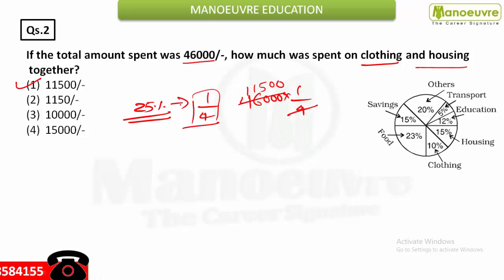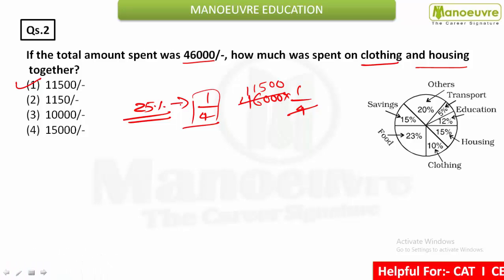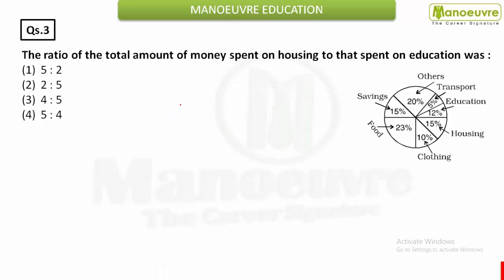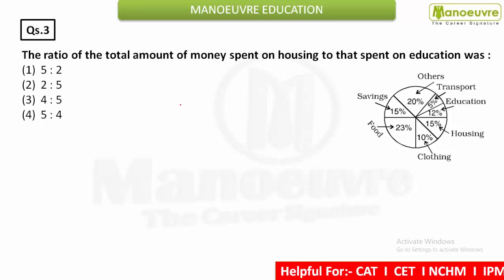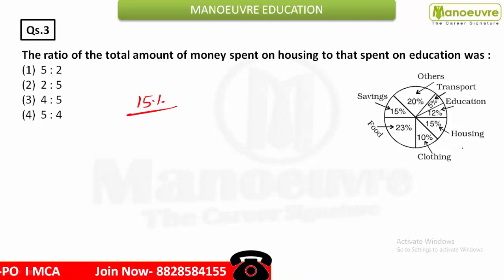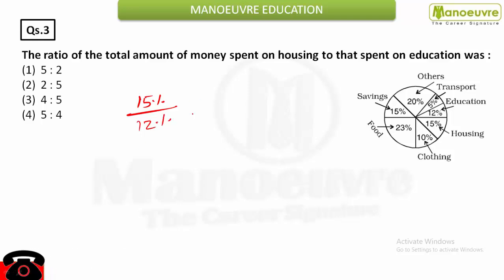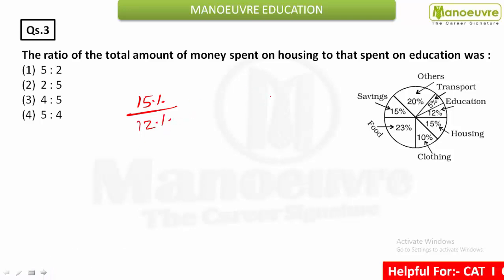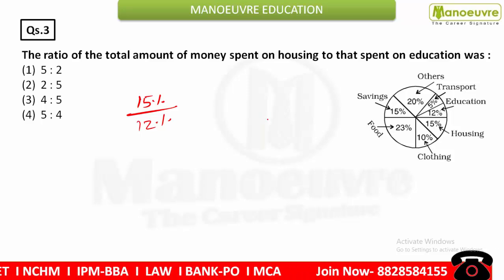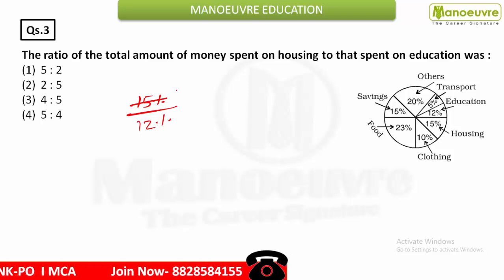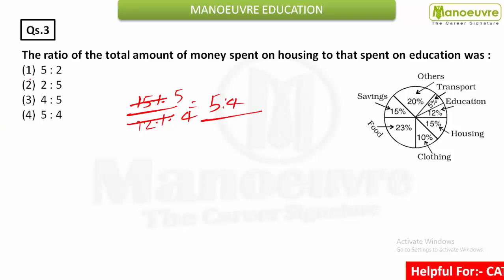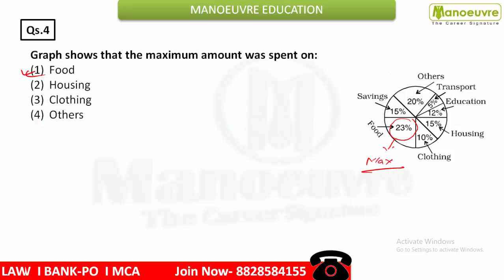This was an easy question — the key is to reduce your calculation as much as possible. Moving ahead: the ratio of the total amount spent on housing to that spent on education. Housing is 15% and education is 12%. Since the base is the same, just simplify: 15 to 12 equals 5 to 4. So 5:4 is your answer, option 4.